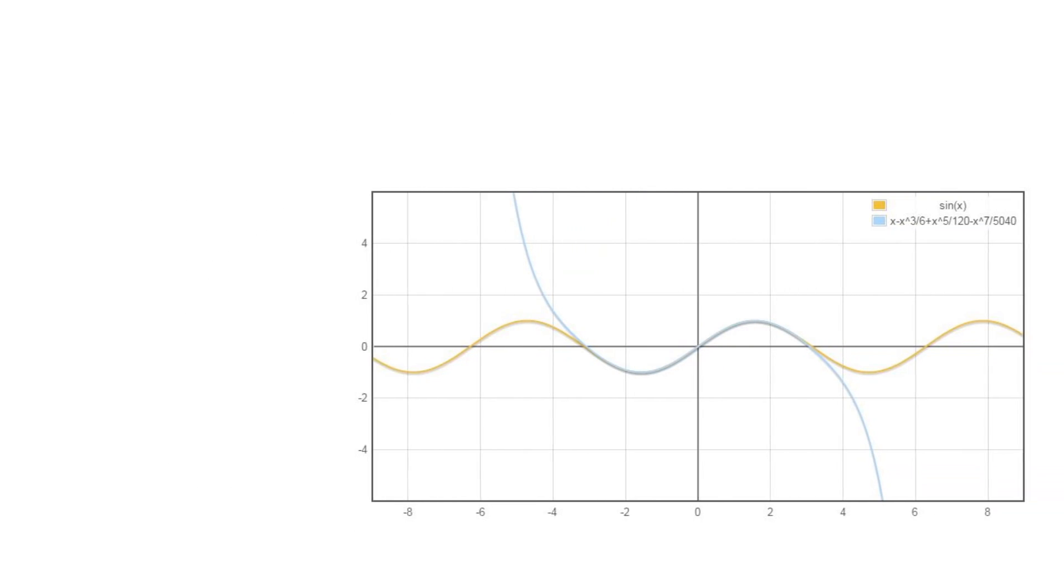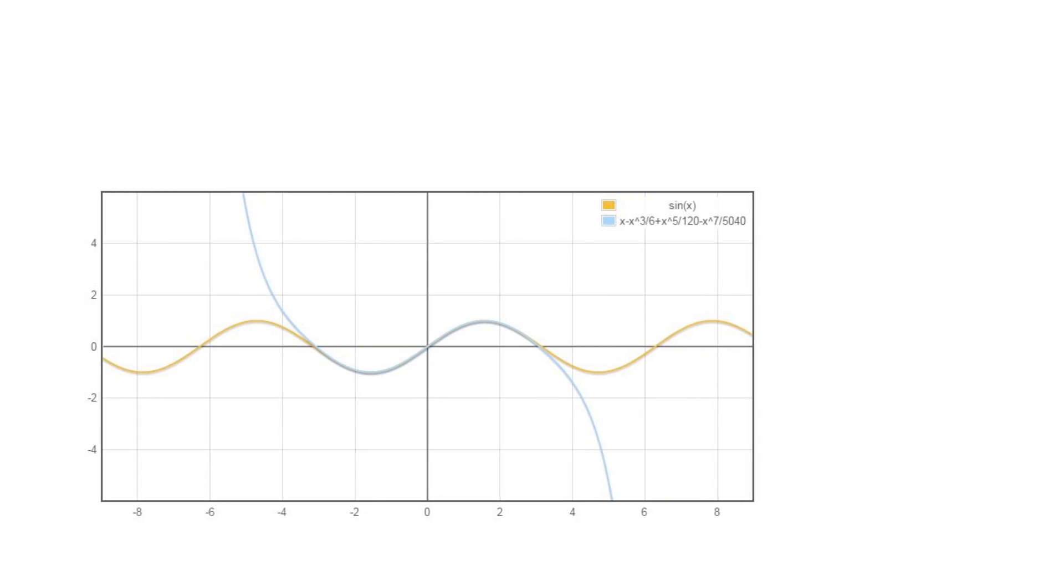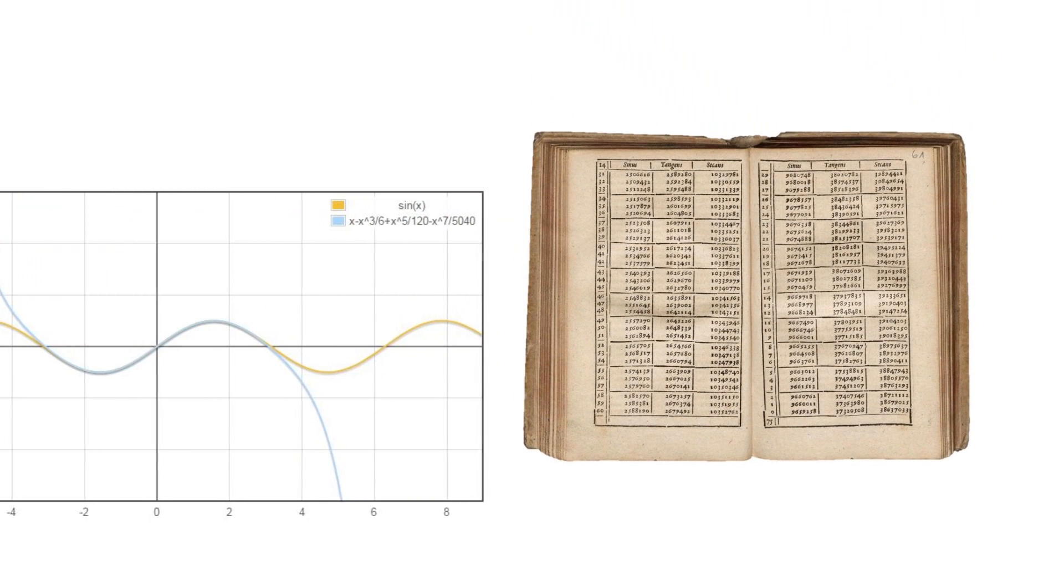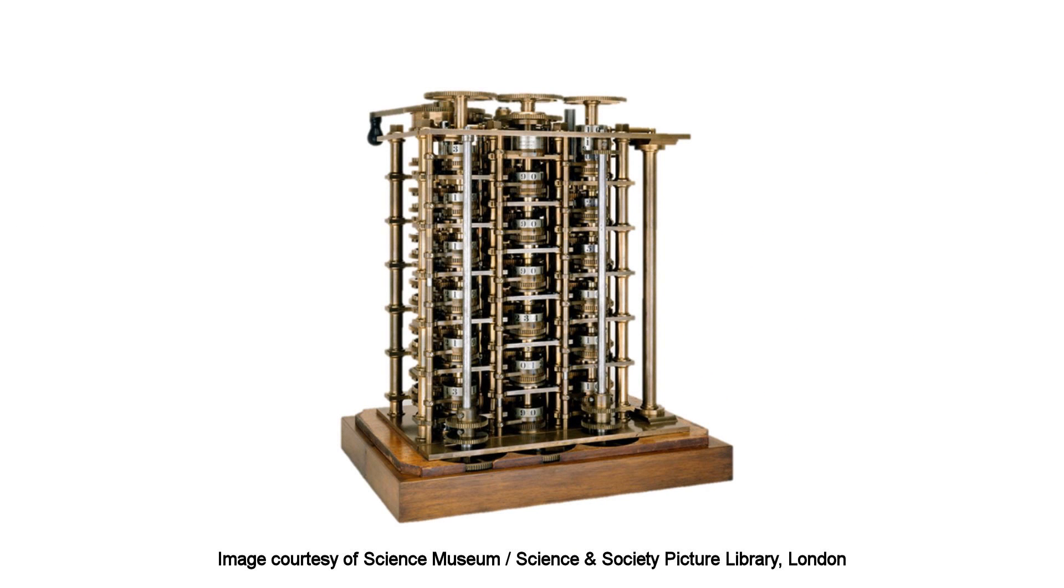Babbage's goal was to eliminate all sources of human error in the creation of mathematical tables. The project was funded by the British government for 19 years, but only a small fragment of the machine was actually built.